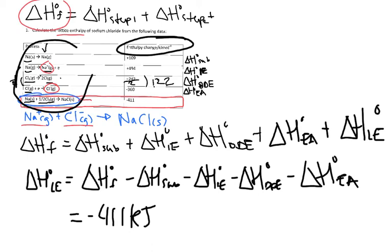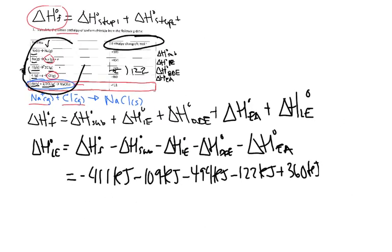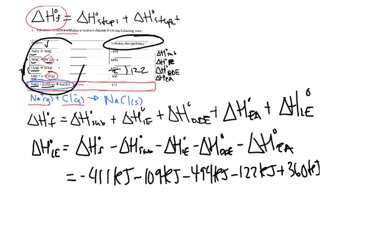So you have negative 411 kilojoules minus 109 kilojoules minus 494 kilojoules minus 122 kilojoules minus 360 kilojoules. And this equals negative 776 kilojoules.